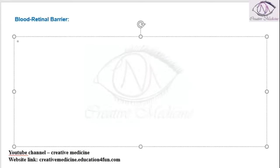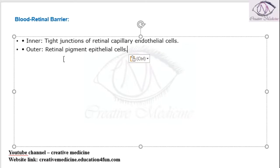The blood-retinal barrier is of two types: inner blood-retinal barrier and outer blood-retinal barrier. The inner blood-retinal barrier is formed by the tight junctions of retinal capillary endothelial cells. The outer blood-retinal barrier is present in the retinal pigment epithelial cells.